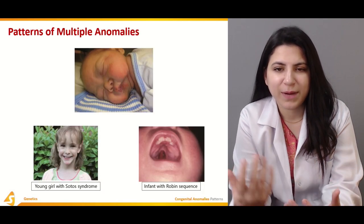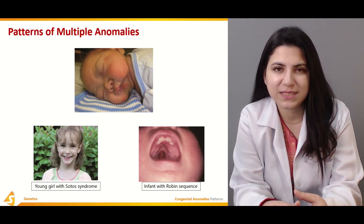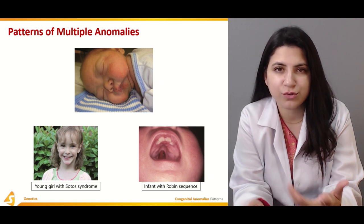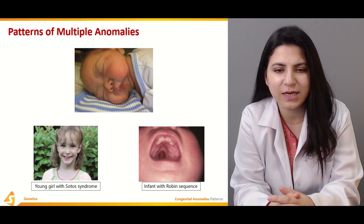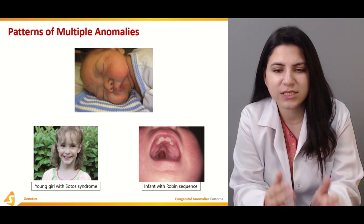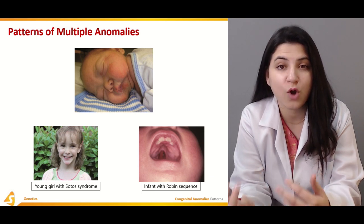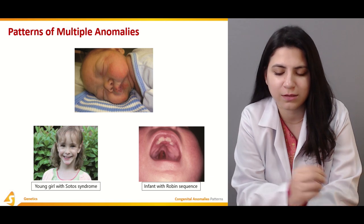Starting off with the pattern of multiple anomalies — whenever there are multiple anomalies, they are associated somehow, and their association can help us differentiate them into syndromes, sequences, and associations. For example, there is a girl suffering from Soto's syndrome and an infant with Robin sequence. We'll see how they differ and on what basis we term one as a syndrome and another as a sequence.